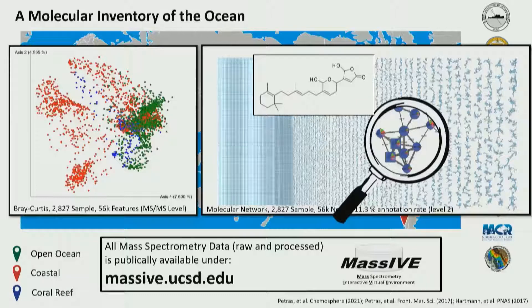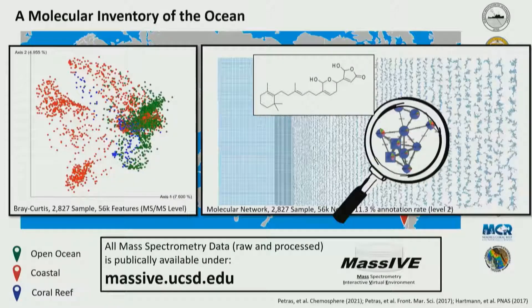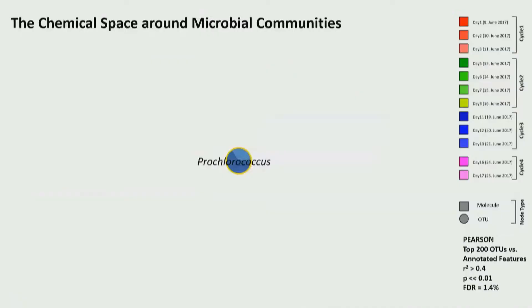Here, for example, we see a sub-network of a natural product called monoalide, which has been isolated from sponges. We see there's an entire family of different derivatives. And now when we have paired sequencing data, we also have information about the microbial communities where these compounds are found.